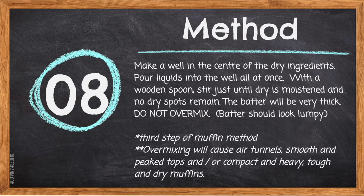Step eight: make a well in the center of the dry ingredients and pour the liquids into the well all at once. With a wooden spoon, stir until the dry is moistened and no dry spots remain. The batter should be very thick — do not over mix. The batter should look lumpy. This is the third step in the muffin method. Over mixing will cause air tunnels, smooth and peaked tops, and compact, heavy, tough, and dry muffins.